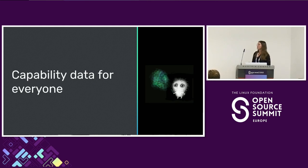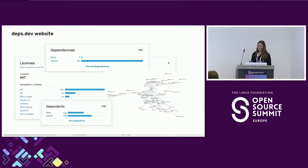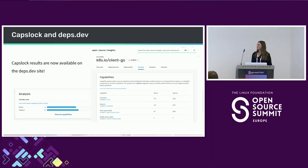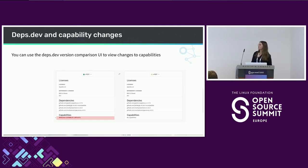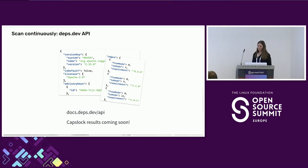Now I'm going to talk about how Caps Lock and Deps.dev are working together to make capability information more broadly available. Deps.dev is a website that contains rich information on software packages including dependency graphs, licenses, etc. Caps Lock results are now available on the Deps.dev site for Go packages we've been able to analyze, and you can find information on which capabilities were present in that particular build. You can also find the number of direct and indirect calls in each capability, and use the Deps.dev version comparison view to see if capabilities have changed between two versions of a package. Deps.dev also has a freely available API, and Caps Lock results will be added to this API soon.